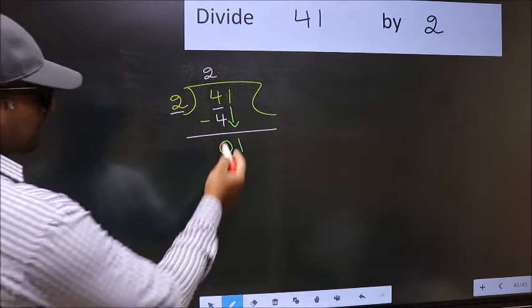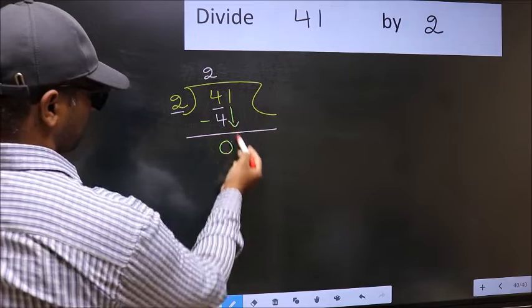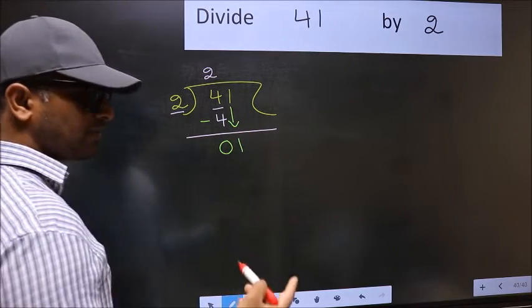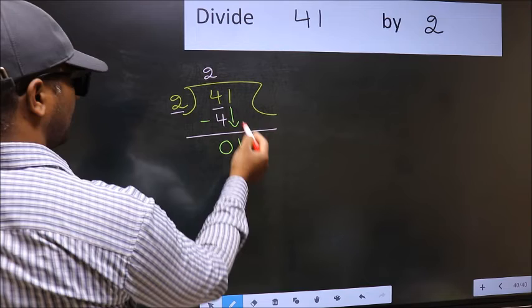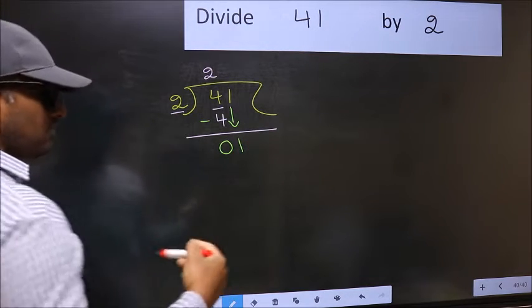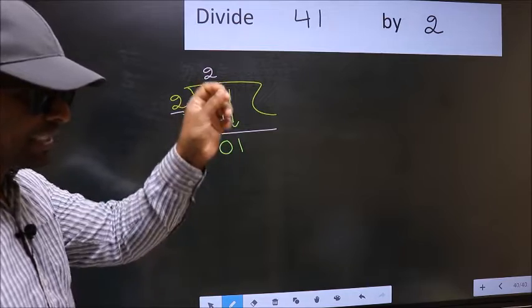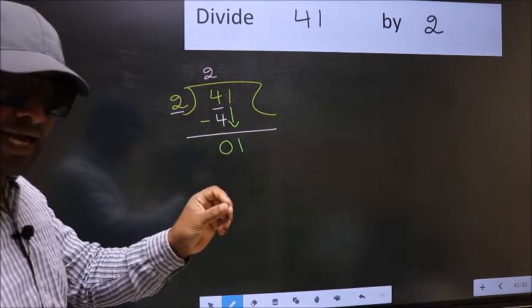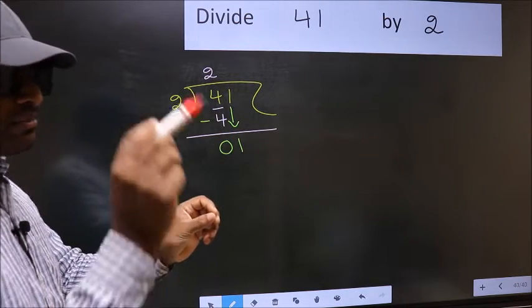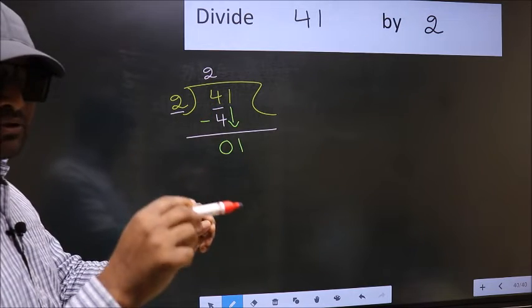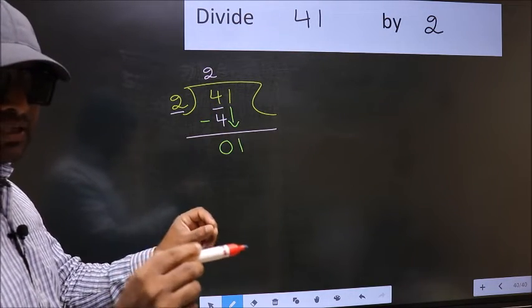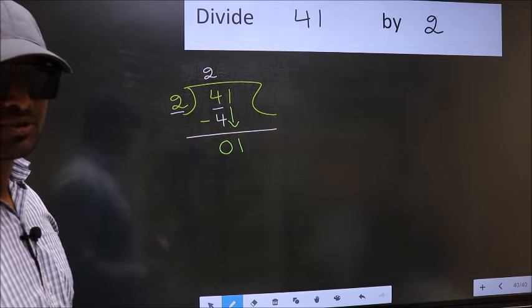And why is it wrong? Just now you brought the number down, and in the same step, you want to put a dot and take 0 here, which is wrong. I repeat, bringing the number down and in the same step, put a dot and take 0. Both at the same step you are not supposed to do.